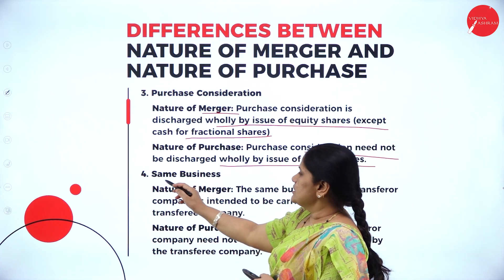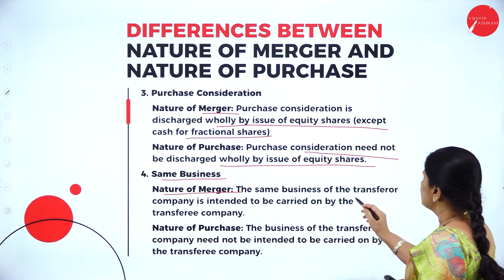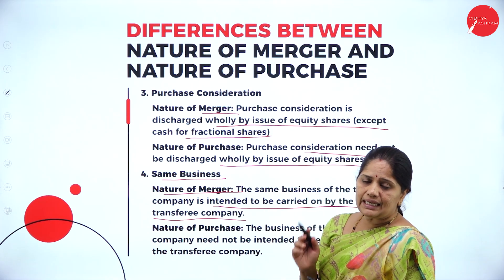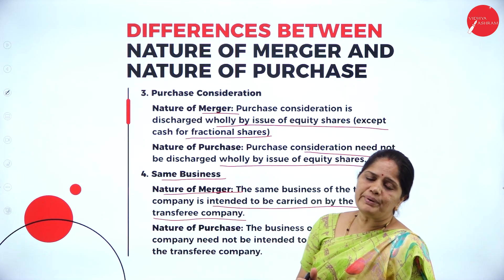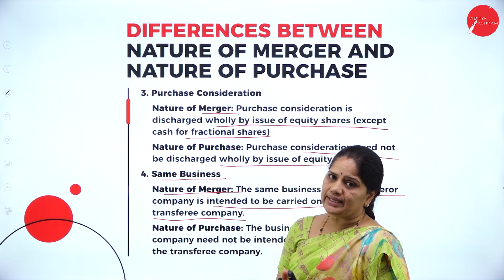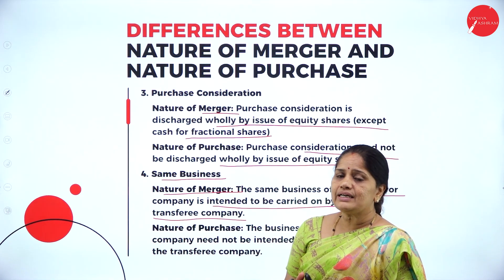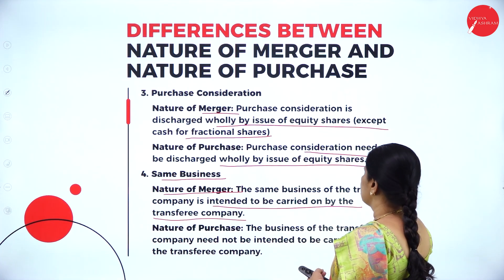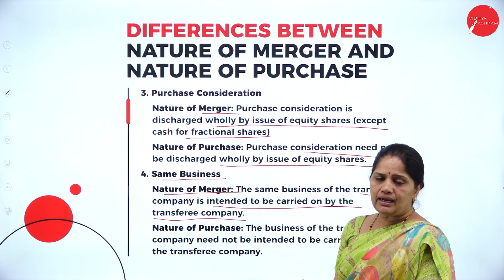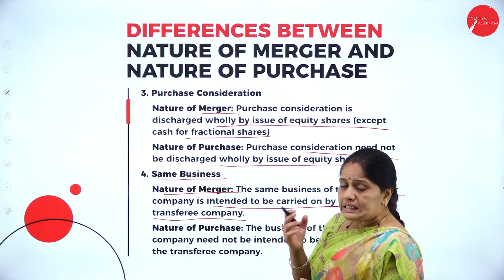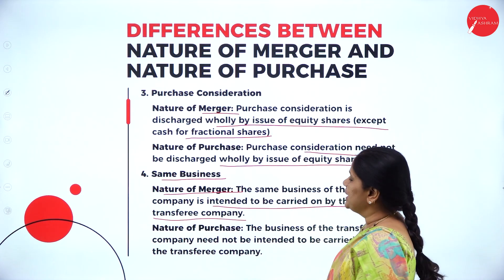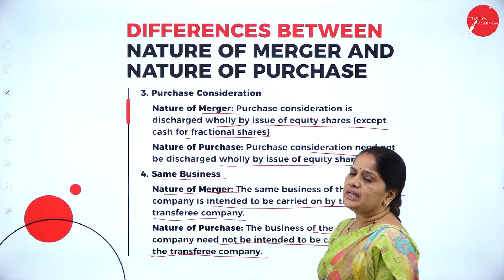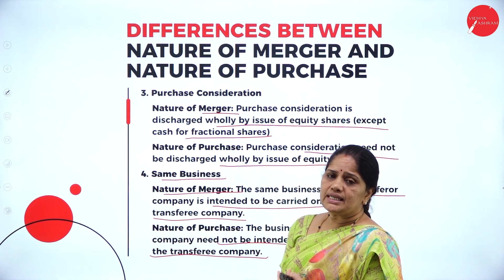The fourth difference relates to the same business. In amalgamation in the nature of merger, the same businesses of the transferor company are intended to be carried on by the transferee company. This kind of merger occurs only when both business houses are dealing in the same products or doing similar business. Whereas in the nature of purchase, the business need not be carried on by the purchasing company.